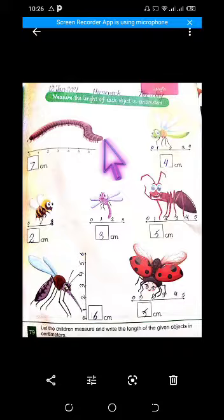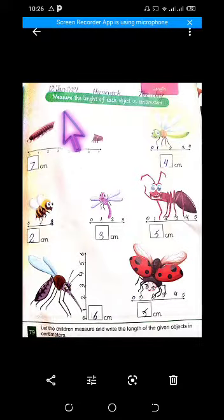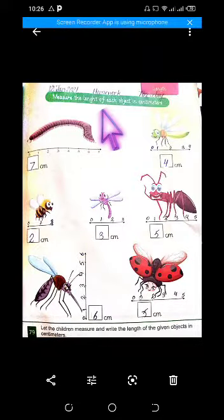This topic is already done, again we are repeating. New objects, new animals. Topic is: measure the length of each object in centimeters. You have to lay down every object on the centimeter ruler.